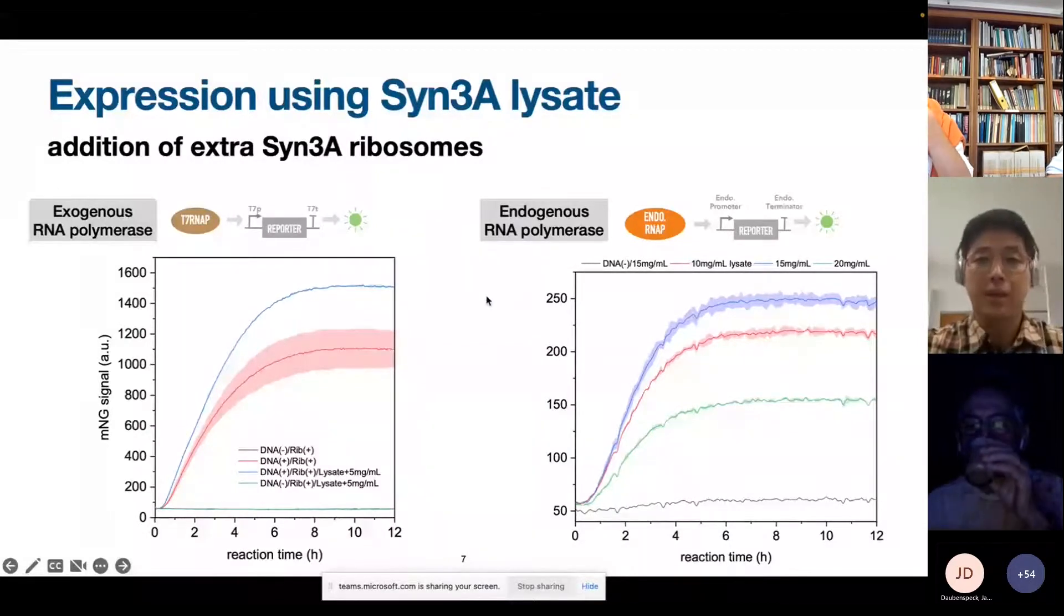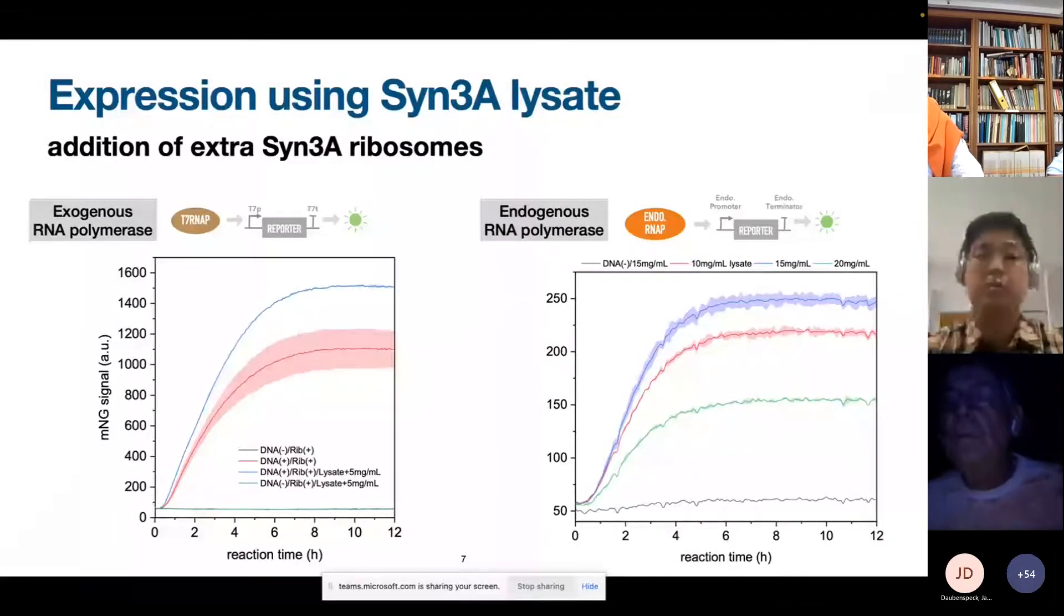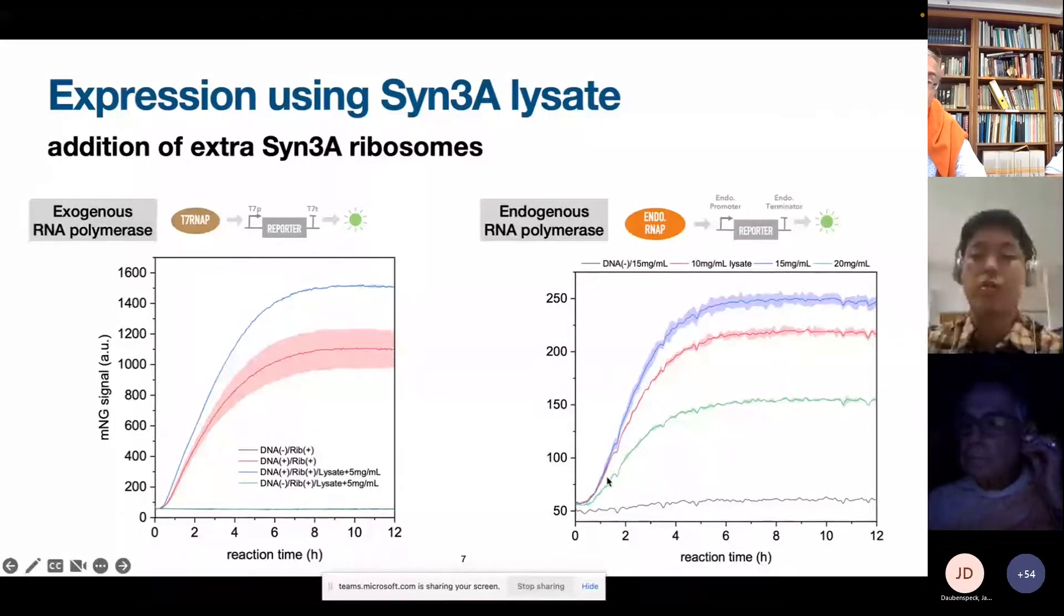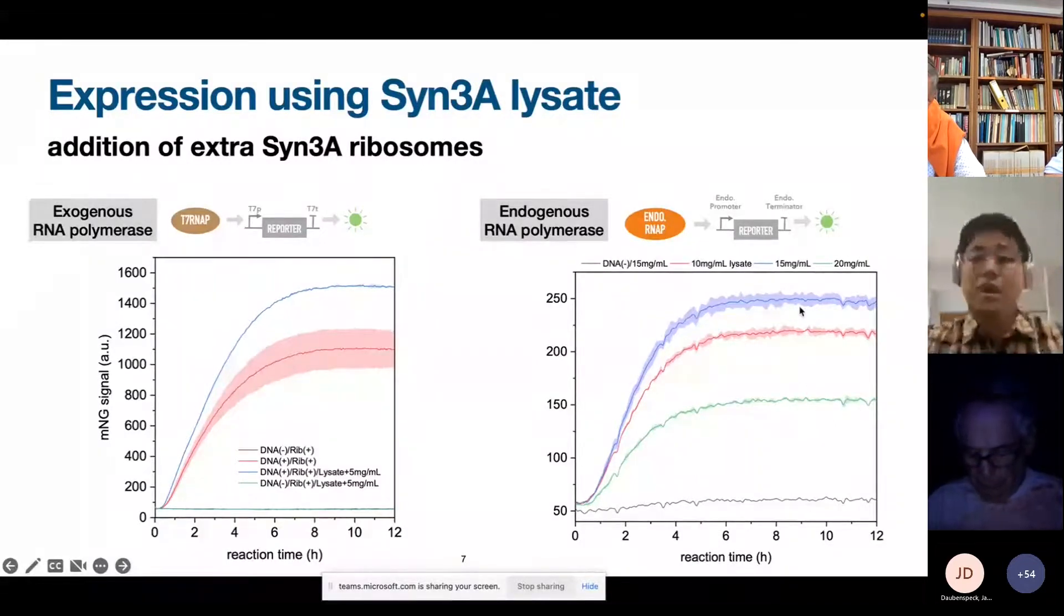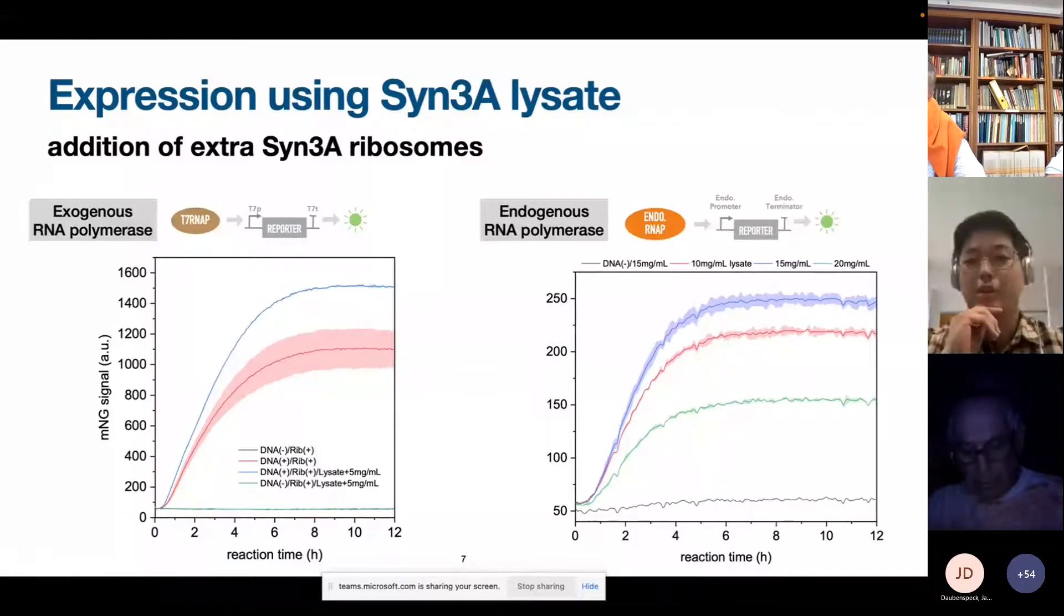We also tested expression controlled by endogenous polymerases already present in the lysate. So in this case, we don't add any exogenous polymerase. We just rely on polymerases that are already in the lysate. And we do see also some expression coming on. So for different lysate concentrations, the expression is quite lower compared to the exogenous polymerases. But this is something that we are also trying to characterize a little bit further.